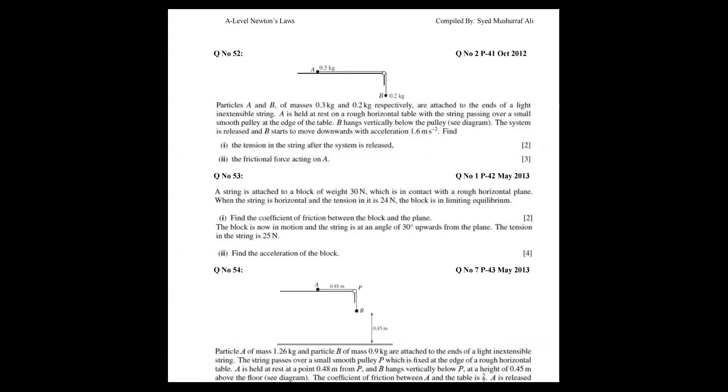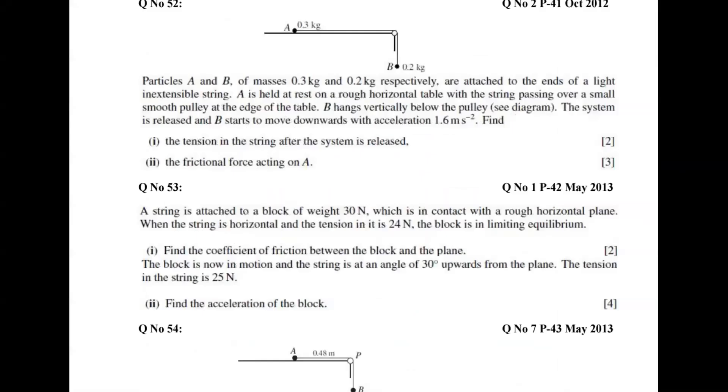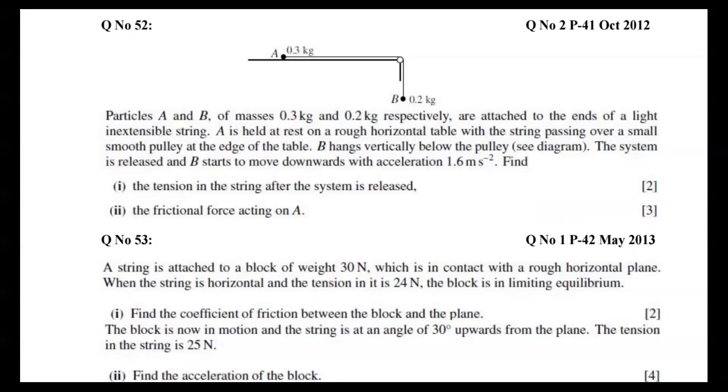Let's say this is a table. Read the question - there are two masses A and B, clearly mentioned. And rough table, sometimes smooth table, but here mentioned rough table. Let me tell you: in our mechanics syllabus, pulleys are always smooth, but tables can be rough or smooth.